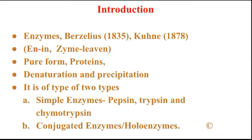Enzymes are obtained in pure form and are proteins in nature. Because they are proteins, they can easily denature or precipitate with the help of salts, solvents, and other reagents. Biologically, they are made up of chains of amino acids.